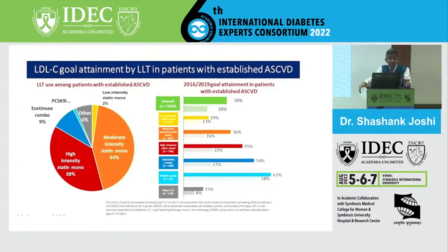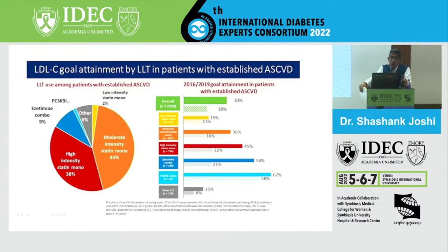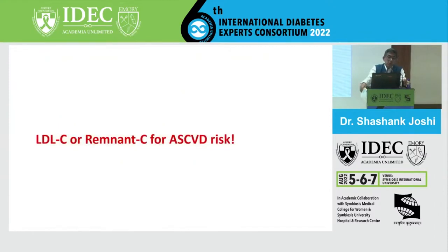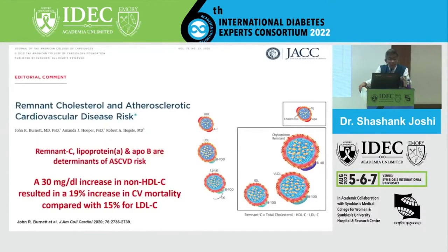We have now divided lipid lowering therapies into different groups. What is responsible for residual risk? Is it triglycerides? Is it LDL cholesterol? Is it remnant cholesterol driving that atherosclerotic vascular risk? That data is now available - it emerged in 2020. Remnant cholesterol is nothing but total cholesterol minus HDL cholesterol minus LDL cholesterol, and it corresponds to a risk which remains.